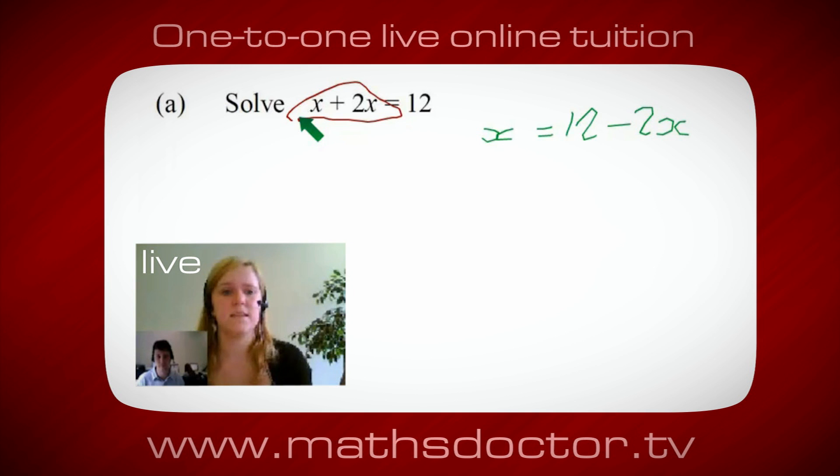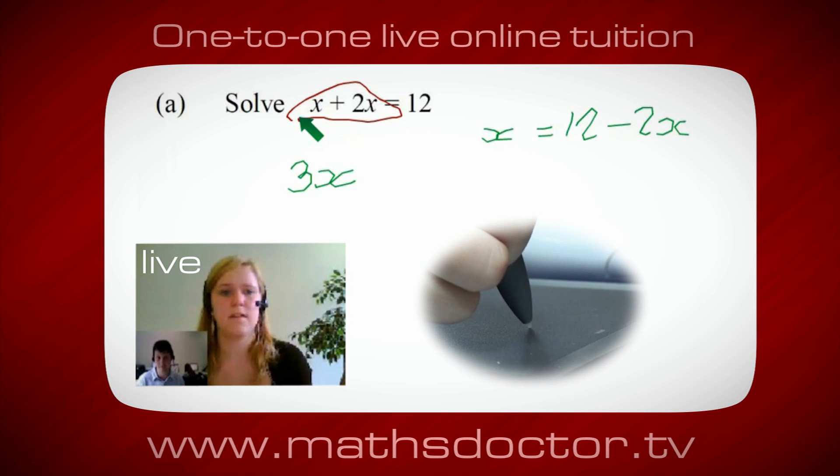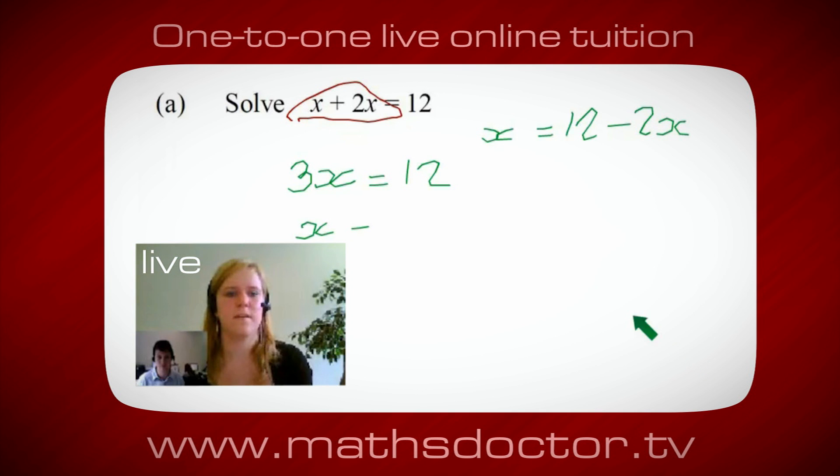Oh, OK, it's 3x, isn't it? Yeah, absolutely. So 3x equals 12. Oh, and so x equals 4. Brilliant. Spot on. Well done.